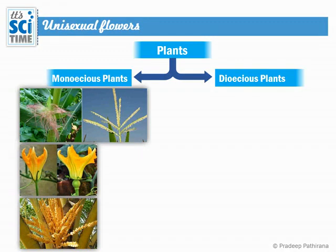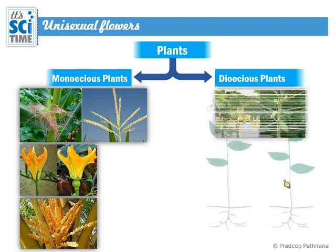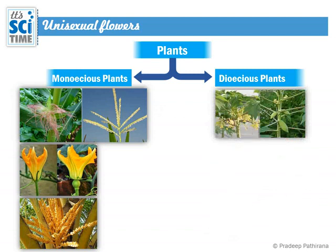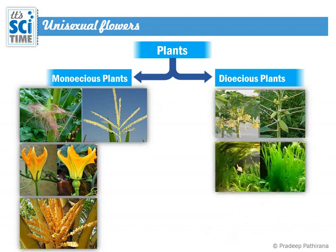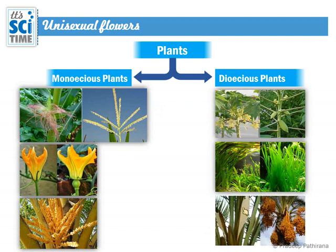In dioecious plants, male flowers are in one plant and female flowers in a separate plant. Examples include papaya — male plants never produce fruits, as that takes place in female plants — vallisneria, and date palms, where male and female flowers are housed in two different plants. This is how we categorize plants as monoecious and dioecious based on their unisexual flowers.